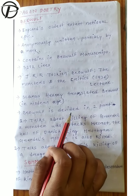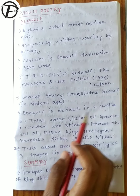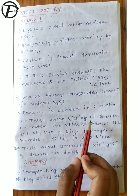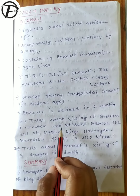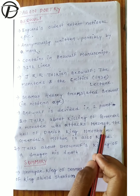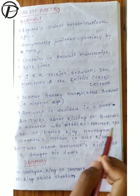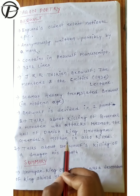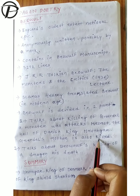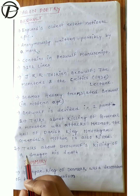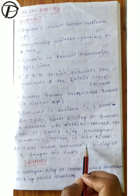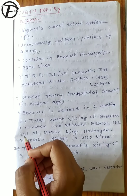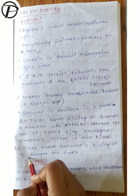Beowulf is divided into two parts. In the first part, it talks about the killing of Grendel, who is a monster that attacks Heorot, the hall of the Danish king Hrothgar. Grendel's mother is also killed. In the second part, it talks about Beowulf's killing of a dragon and his death.